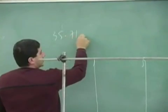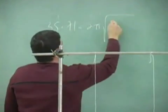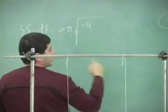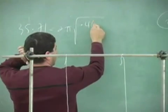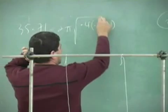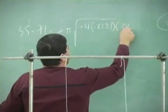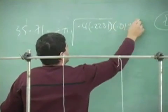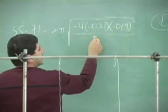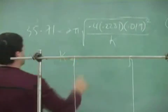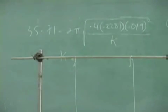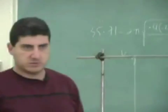35.71 equals 2π times the square root of 0.4 — which is the two-fifths — times the mass, which is 0.2281, times 0.019 squared, divided by kappa. Then square both sides. For kappa, I expect it's going to be a small number because this string is pretty weak — it doesn't bring it back quickly.